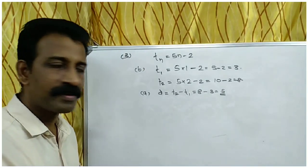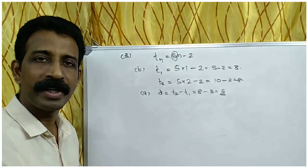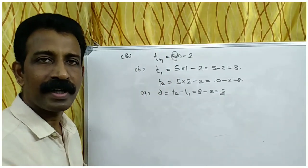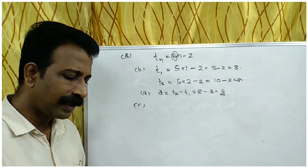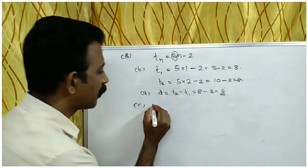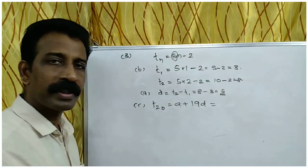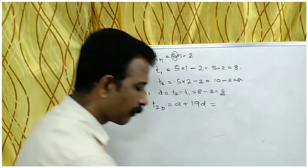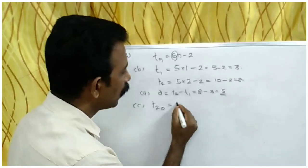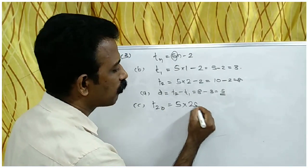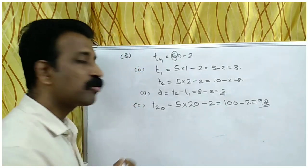Note that the coefficient of N in the algebraic form is the common difference. For part C, we find the 20th term: T20. Using the algebraic form, substitute N equals 20: 5 times 20 minus 2 equals 100 minus 2, which equals 98. So the 20th term is 98.